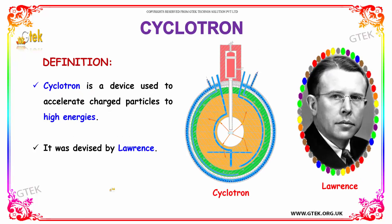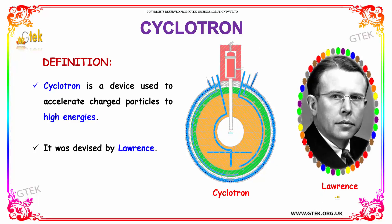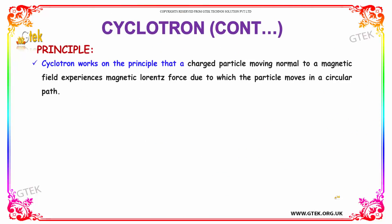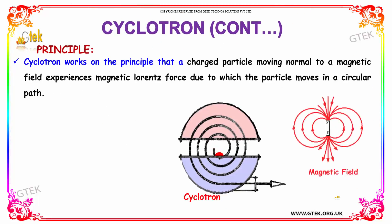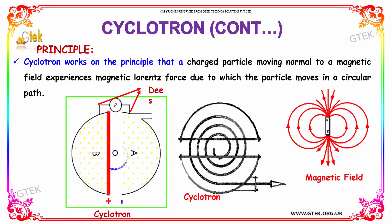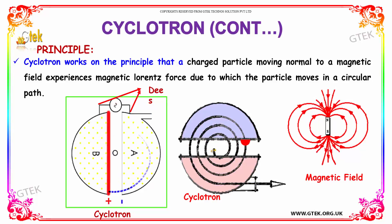By definition, cyclotron is a device used to accelerate charged particles to high energies, and it was devised by the great physicist Lorentz. Here is the principle of cyclotron: it works on the principle that a charged particle moving normal to a magnetic field experiences a magnetic Lorentz force.